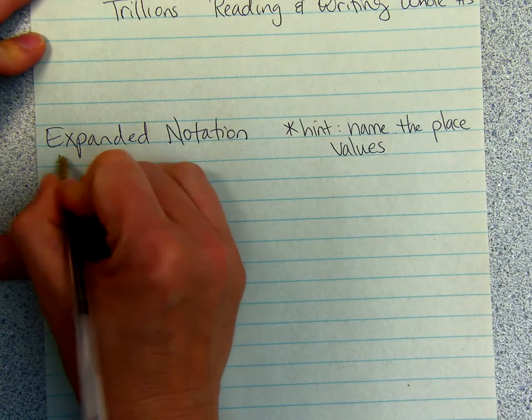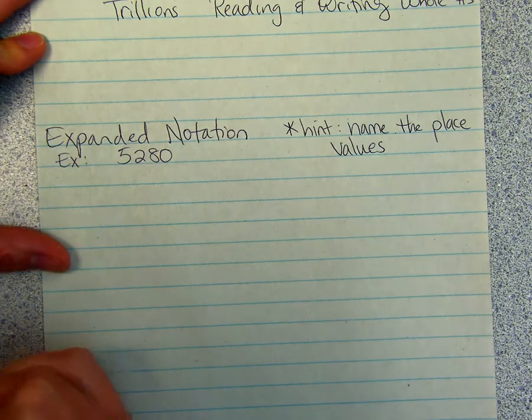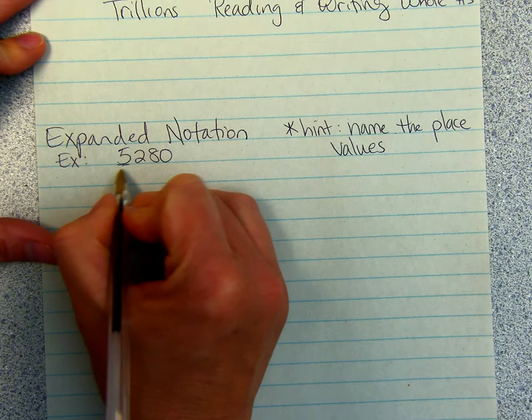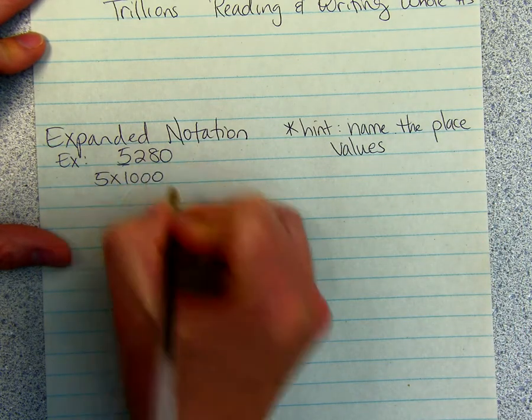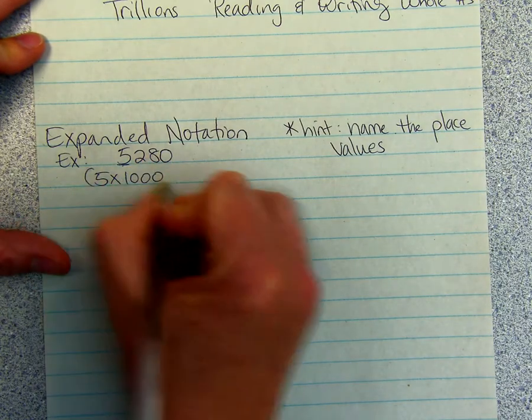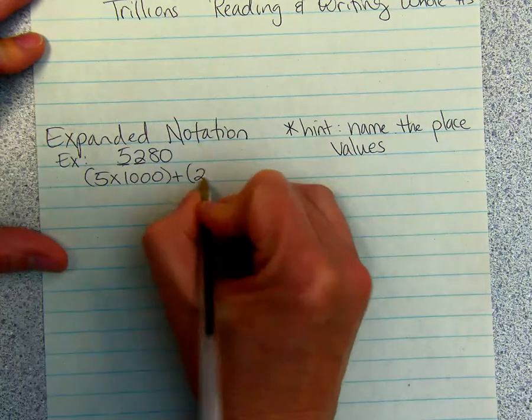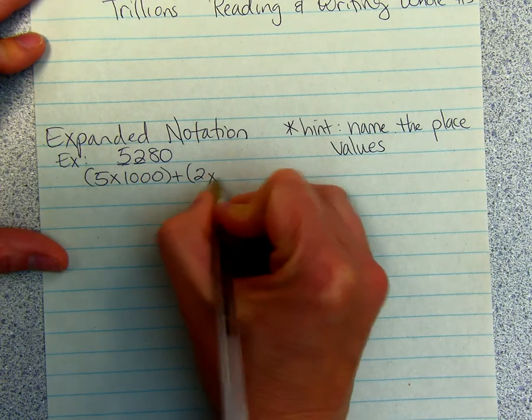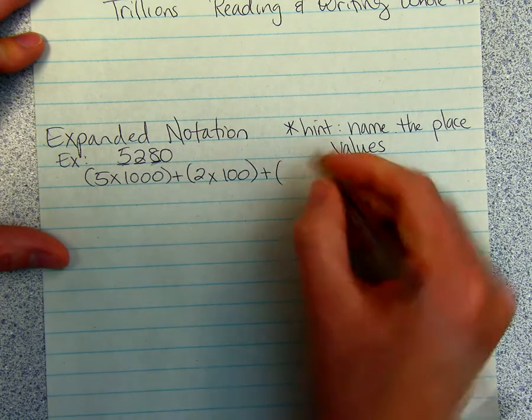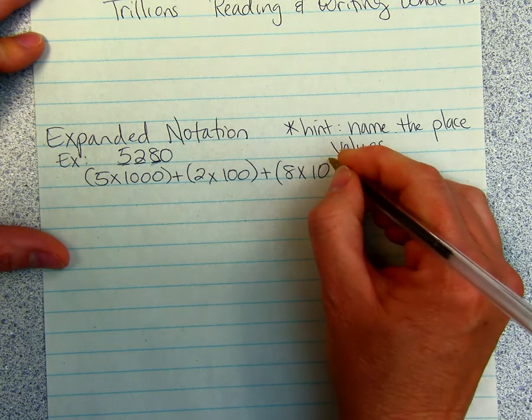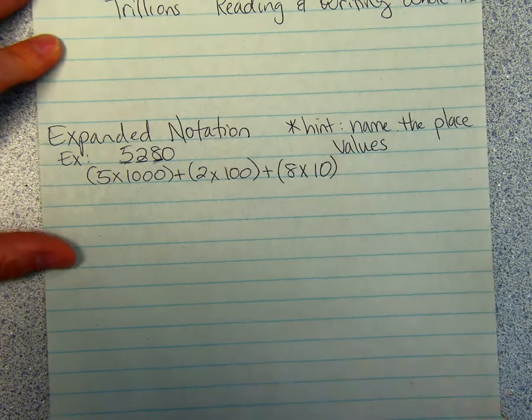Here's an example for Expanded Notation: 5,280. The 5 is in the thousands place, so we do 5 times 1,000. Here's that naming the place value. Then we add the 2 in its place value. 2 is in the hundreds place, so you do 2 times 100. Then we add 8 times 10. And that's the end. We do not add 0 times 1, because that's just 0.